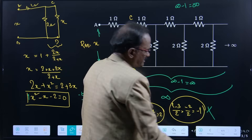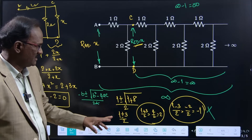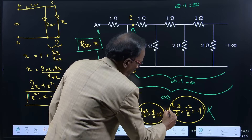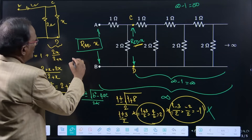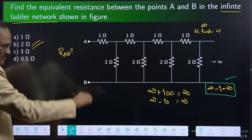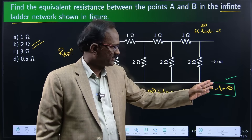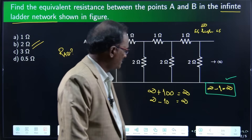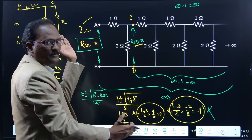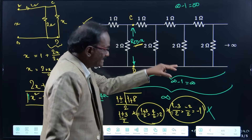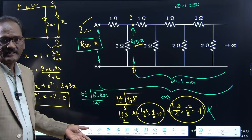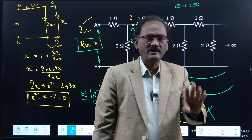The negative answer we should not consider, because equivalent resistance cannot be a negative value. So the answer is 2 ohms. R_AB equals X, and X equals 2. R_AB equals 2 ohms — that is the answer. The concept used is: infinity minus 1 equals infinity. This is the trick we used; removing one pair still leaves infinity rungs in the ladder, so we write X in both places.